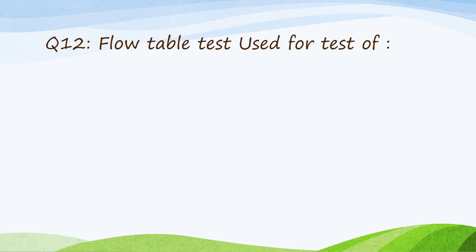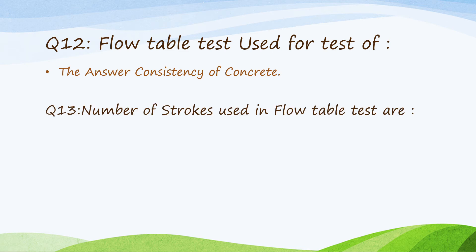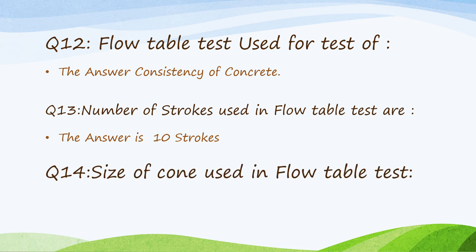Question twelve: The flow table test is used to test the consistency of concrete. Question thirteen: Number of strokes used in the flow table test are 10 strokes. Question fourteen: Size of cone used in the flow table test is 130 by 200 by 200 millimeters.